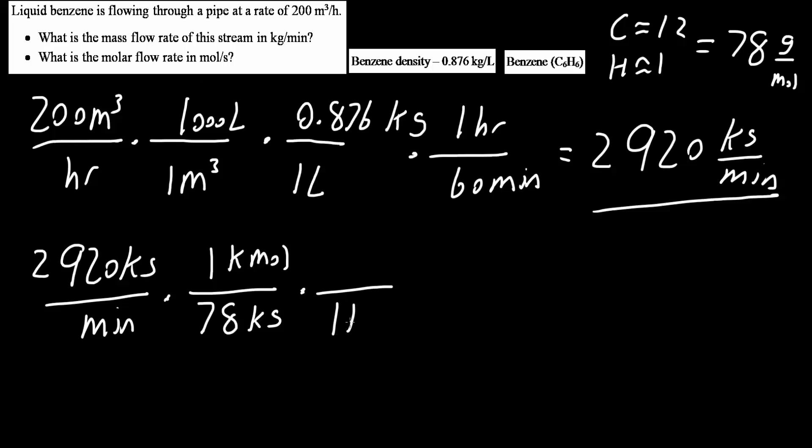So we know that one kilomole is 1000 moles, and one minute is 60 seconds.